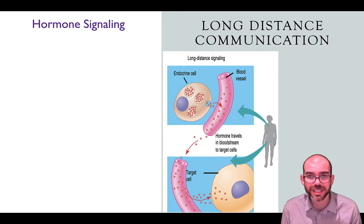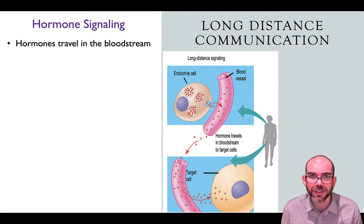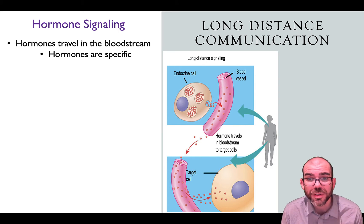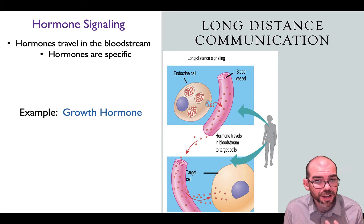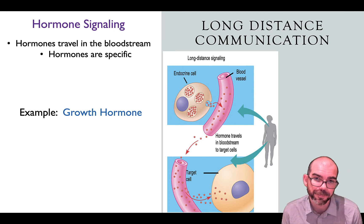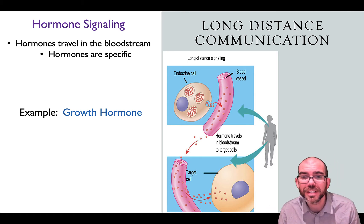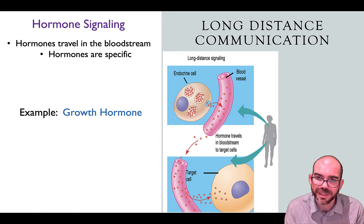For long-distance communication, we're going to use hormones. With hormone signaling, these are molecules that can travel across the entire bloodstream, and what's great about them is they're specific. For example, human growth hormone can only cause growth in cells that have a receptor for human growth hormone. All other cells that receive the molecule aren't going to respond because they don't have a receptor to capture it. This is how your body is able to have specific growth at specific times.